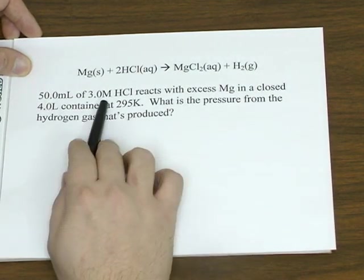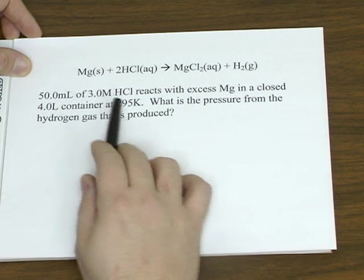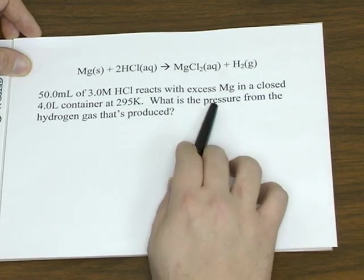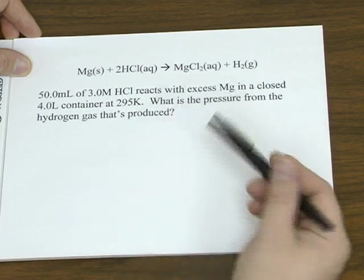Let's say you got 50 milliliters of 3 molar hydrochloric acid that you react with excess magnesium in a closed 4 liter container at 295 Kelvin. Let's see what the pressure from the hydrogen gas that's produced is going to be.